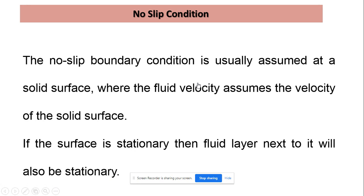The no-slip boundary condition refers to the velocity of fluid when it is in contact with a solid boundary or solid surface. When a fluid is in contact with a solid surface, it assumes the same velocity as that solid surface.